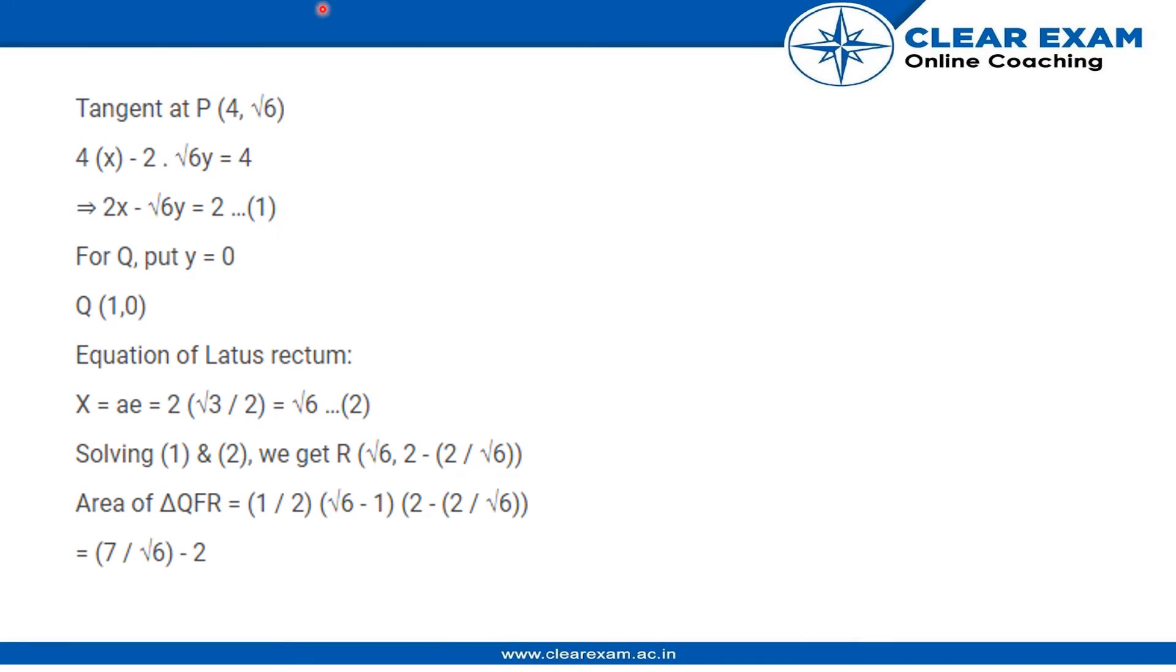And for this we know that the tangent at a point on the hyperbola can be written as: let's say we have a hyperbola equation as ax² - by² = c. This is a hyperbola equation. So we can write the equation of the tangent from the hyperbola as x₁ into x minus by₁ into y equals c, where x₁, y₁ is the point on which the tangent is passing through.